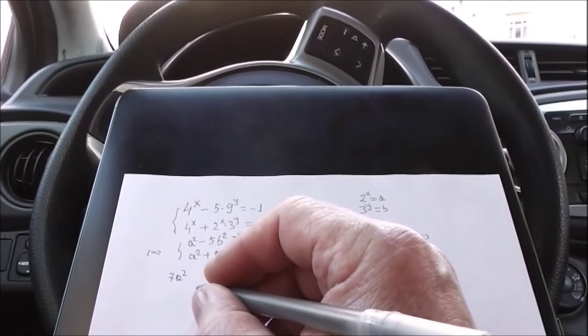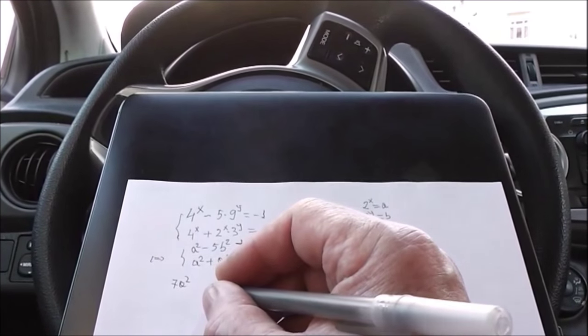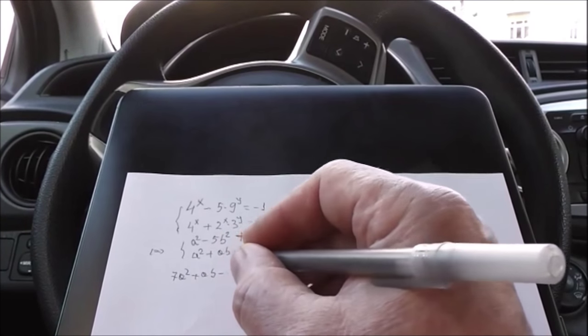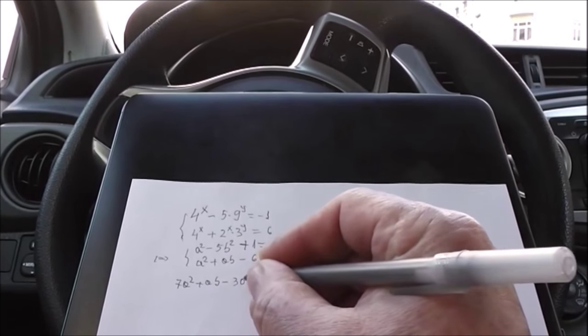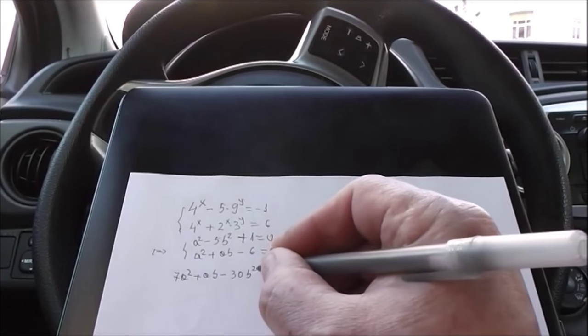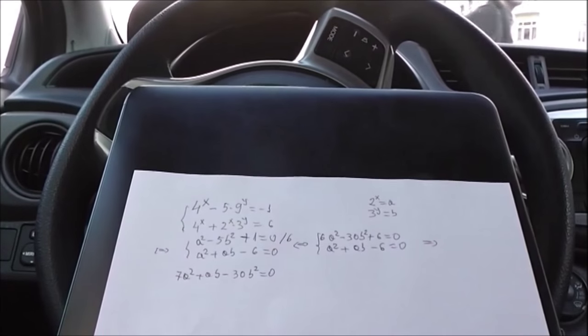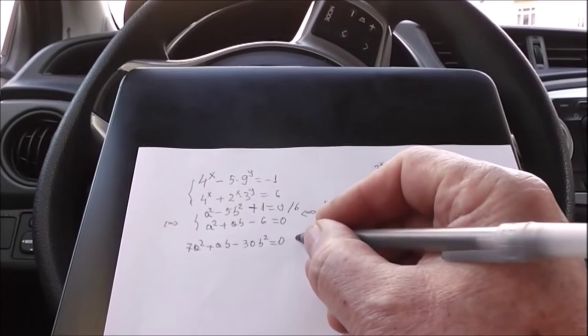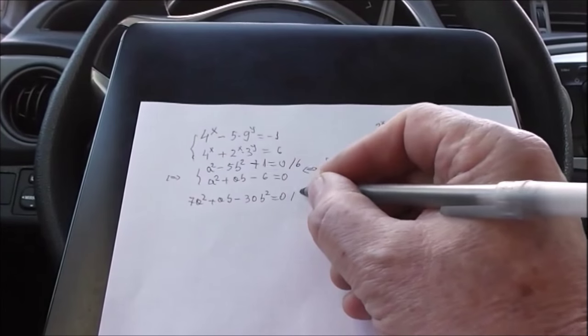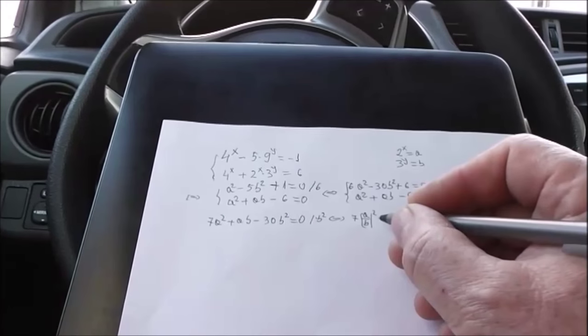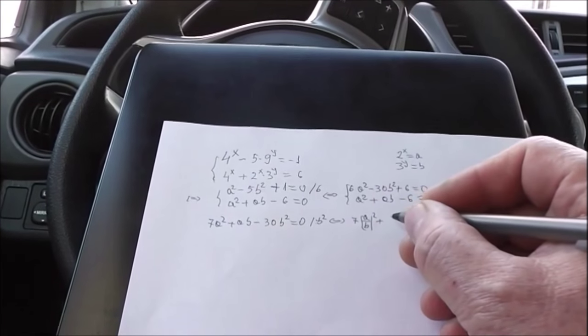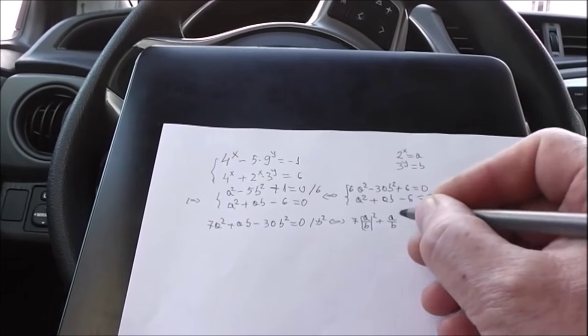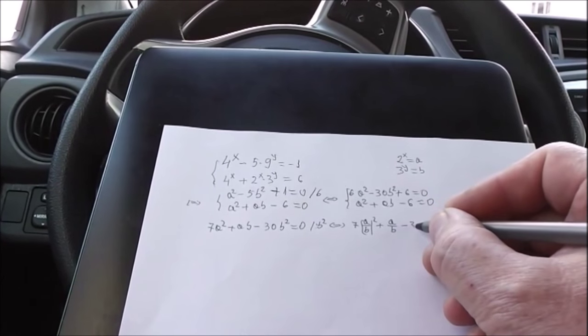And we add them up. And then we'll have 7a² plus ab minus 30b² equals 0. We can divide with b². Correct. And we'll have 7(a/b)² plus (a/b) minus 30 equals 0.